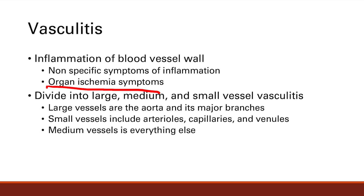Large vessel vasculitis hits the aorta and its major branches, including the carotids. Small vessel vasculitis hits the arterioles, capillaries, and venules, and medium vessel vasculitis hits everything else.